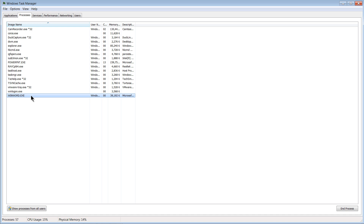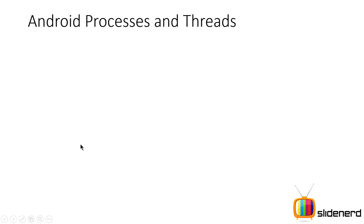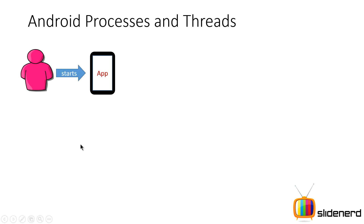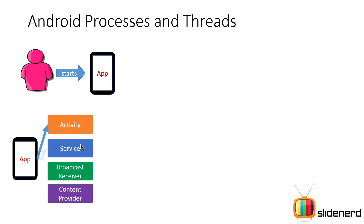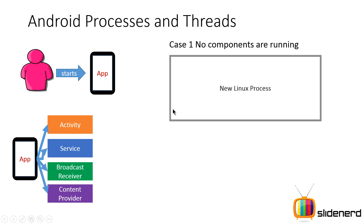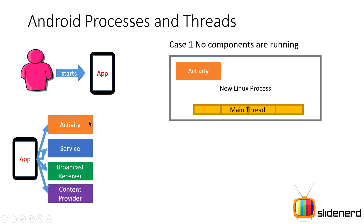Now that you've understood this, let's figure out how Android works with these things. As a user, when you first start your app — let's say your app has all four components: an activity, a service, a broadcast receiver, and a content provider — if no components are running for your app, a new Linux process is created, your activity is put inside that process, and it has access to a single main thread.